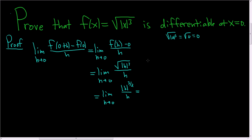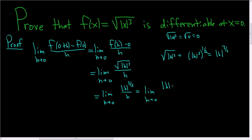And we can do that — we can think of this as the absolute value of h to the 3 halves. The trick here is to get this limit to exist. So what we'll do is write it as follows: this is the absolute value of h times the absolute value of h to the 1 half, all over h. Because 1 half plus 1 is 3 halves.